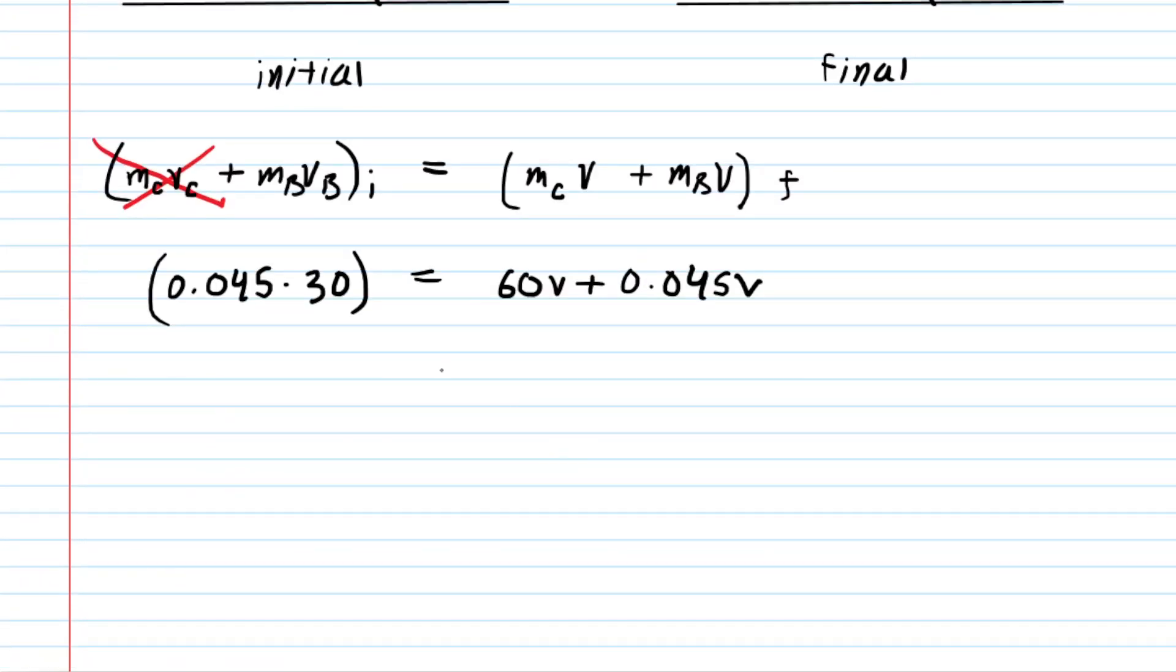Notice on the right hand side those are like terms so you can add them together to get 60.045v. On the left side we multiply 0.045 times 30 and we get 1.35.